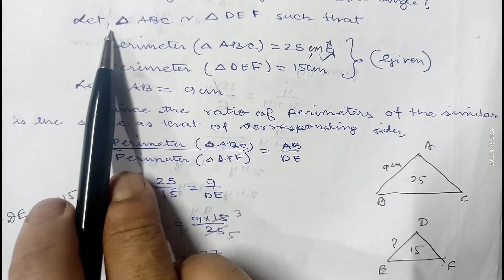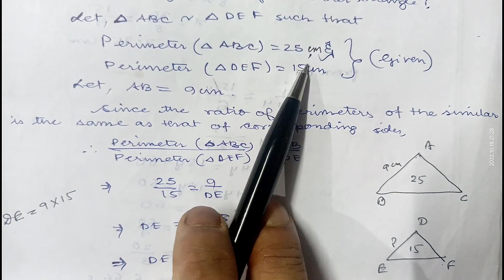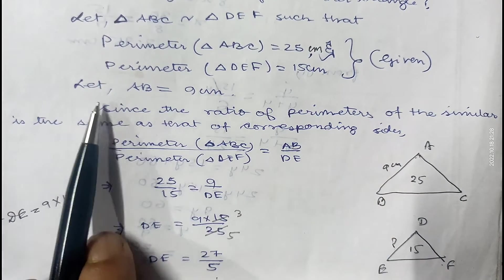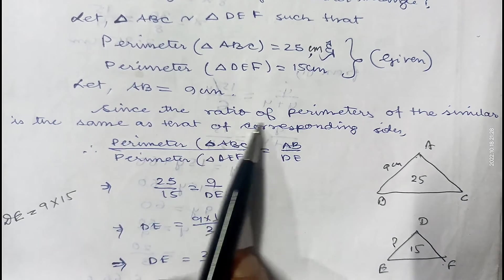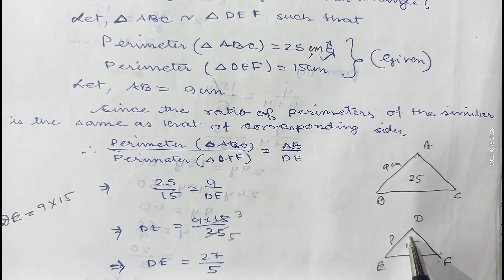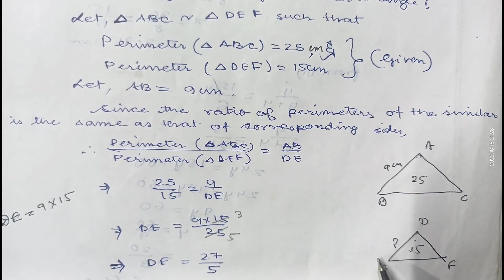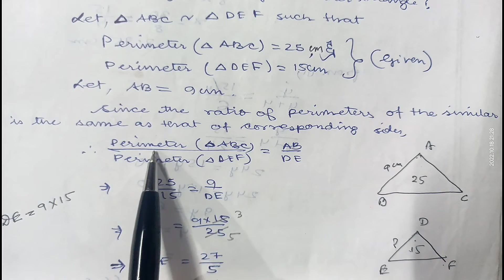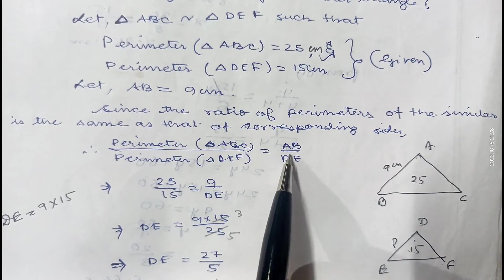Let triangle ABC be similar to triangle DEF such that the perimeter of the first triangle is 25 cm and the perimeter of the second triangle is 15 cm. AB equals 9 cm, and we have to find DE. We know that the ratio of the perimeters of two similar triangles is the same as the ratio of their corresponding sides. Therefore, perimeter of first triangle by perimeter of second triangle equals AB by DE: that is 25 by 15 equals 9 by DE.